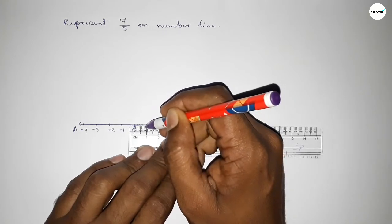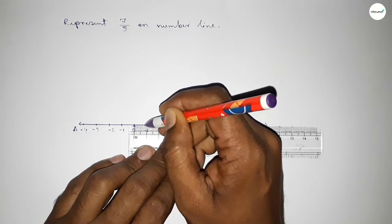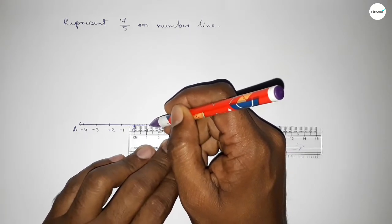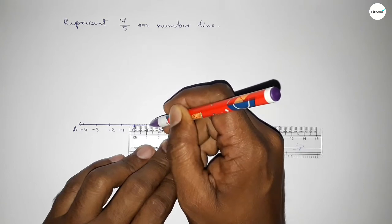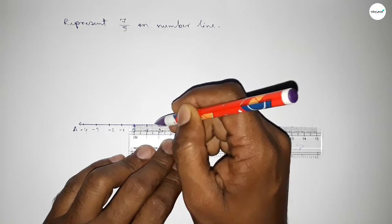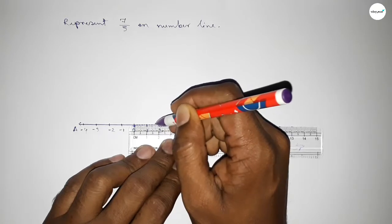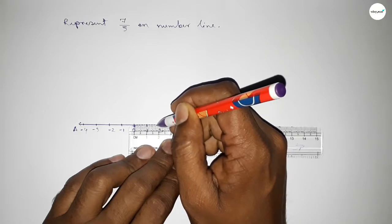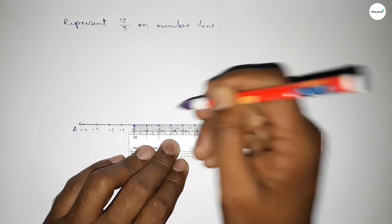Similarly dividing the distance between 1 to 2 into 5 parts. So first 0.2, the second is 0.4, the third is 0.6, and the fourth is 0.8. So by this way we can divide the distance.